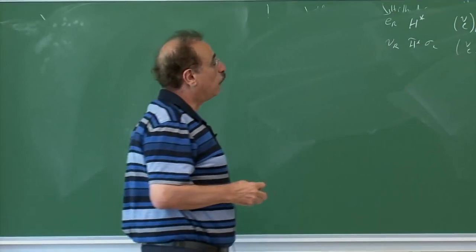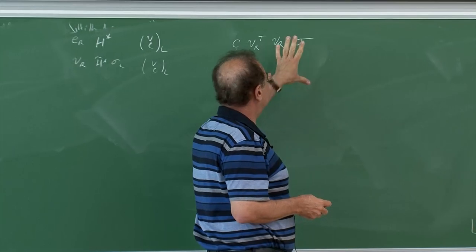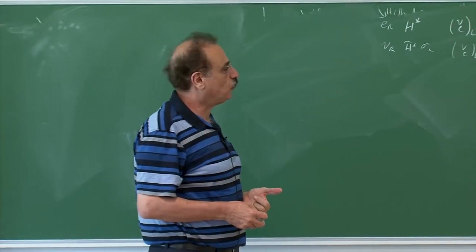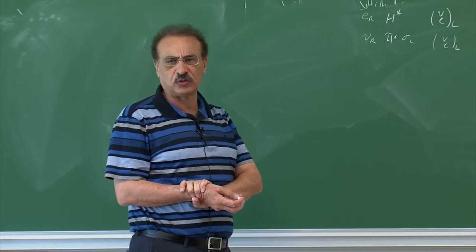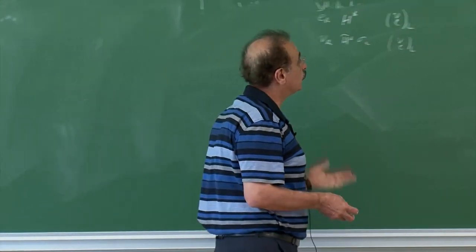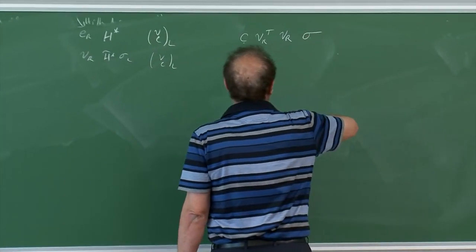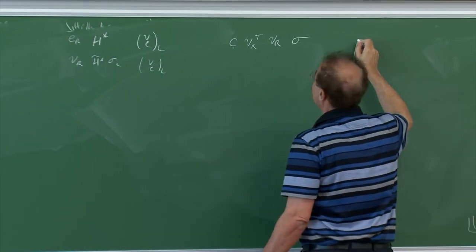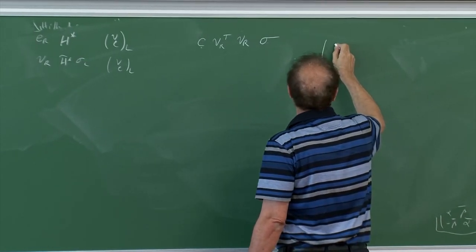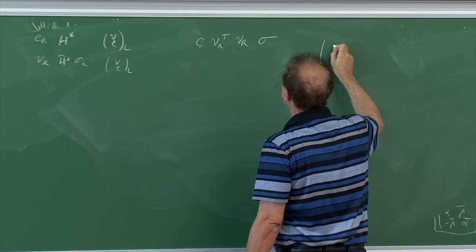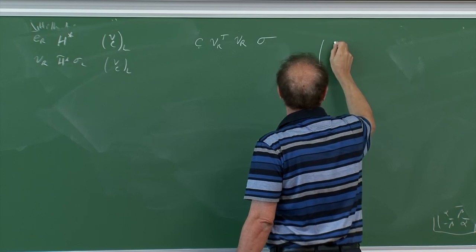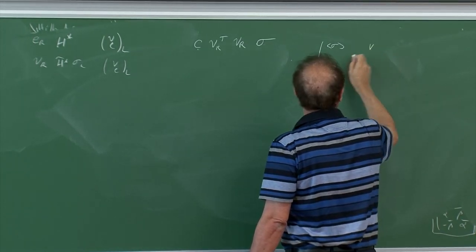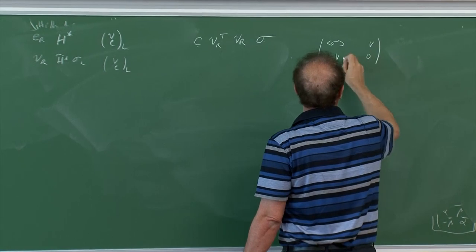The left-handed neutrino mass comes from a 2×2 mass matrix with entries (σ, v; v, 0), where σ is the Majorana mass and v is the Dirac mass. Working out the two eigenvalues gives mixed states: one eigenvalue is approximately σ (the heavy right-handed neutrino mass) and the other is v²/σ.